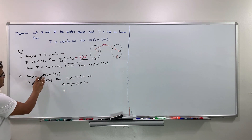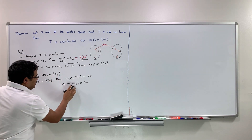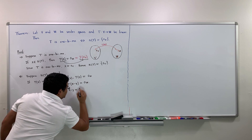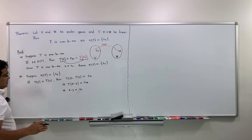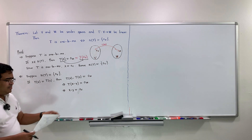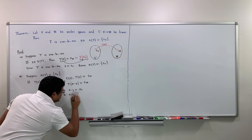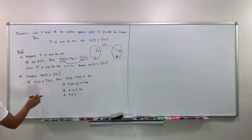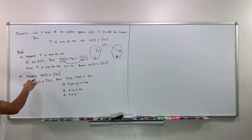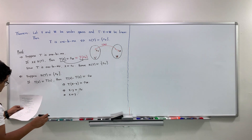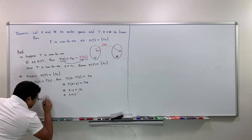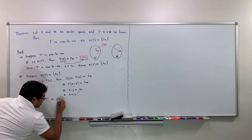Since the null space of T is only the zero vector 0_V, that means x minus y equals 0_V. So the difference of the two vectors in V is zero, meaning they are the same. Therefore x equals y. If T(x) = T(y) implies x = y, then by the definition of a one-to-one map, T is one-to-one.